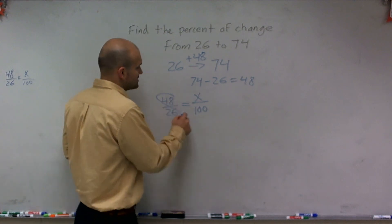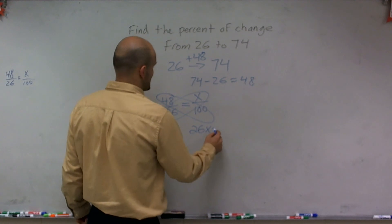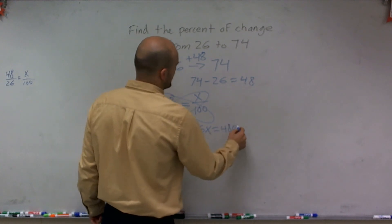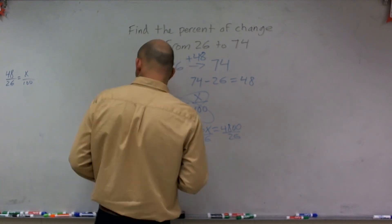So to solve this, we're going to cross multiply. So I have 26 times x equals 4,800. Divide by 26 on both sides.